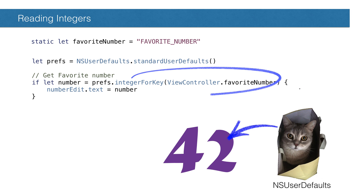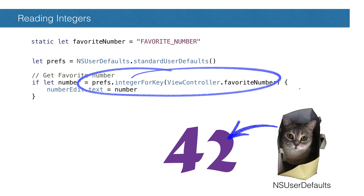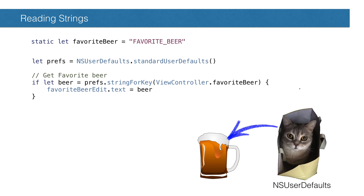If we're setting an integer, we'd use setInteger and getInteger. It's kind of wonky. So strings are objects in, and strings out. Easy.